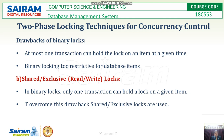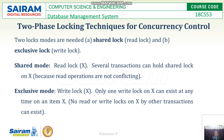The drawback of binary locks is that at most one transaction can hold the lock on an item at a given time, making binary locking too restrictive for database items. To overcome this drawback, we use shared or exclusive locks, also called read or write locks. This rectifies the problem by allowing multiple transactions to hold a read lock simultaneously.